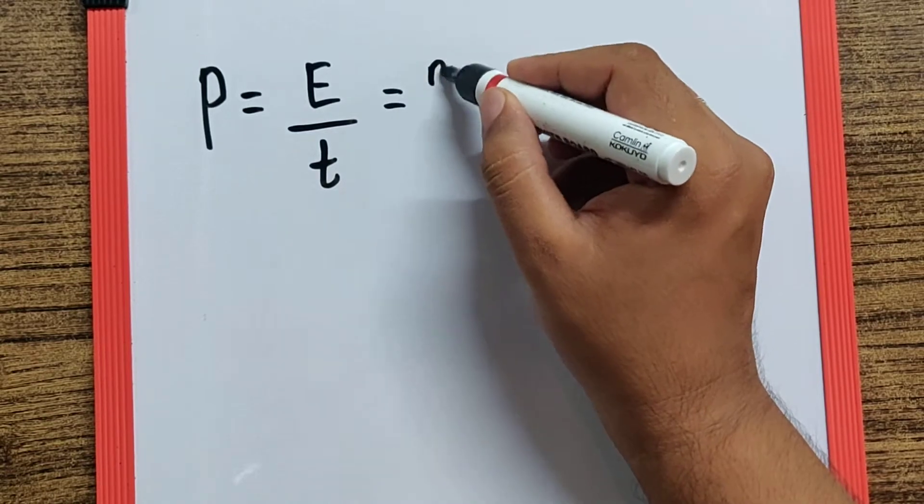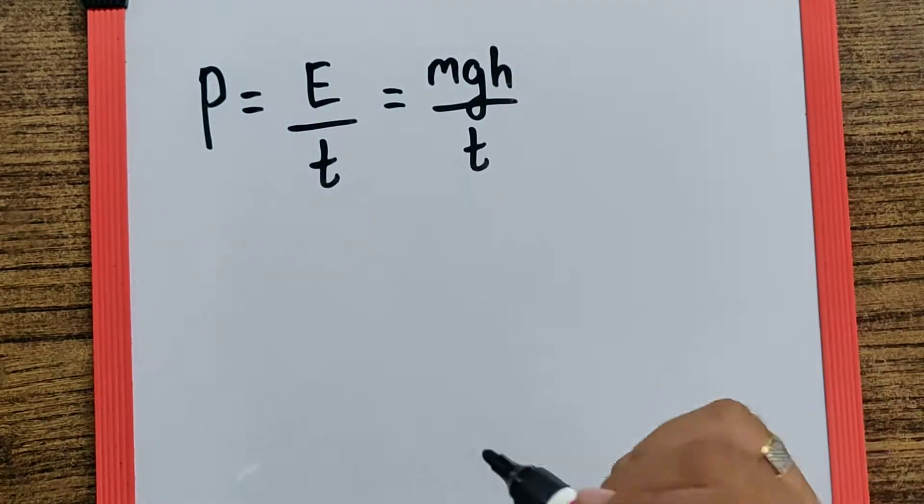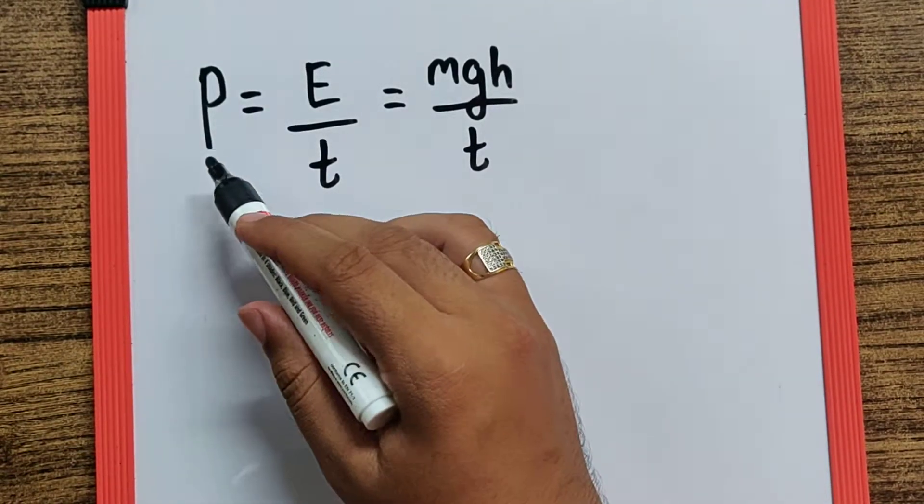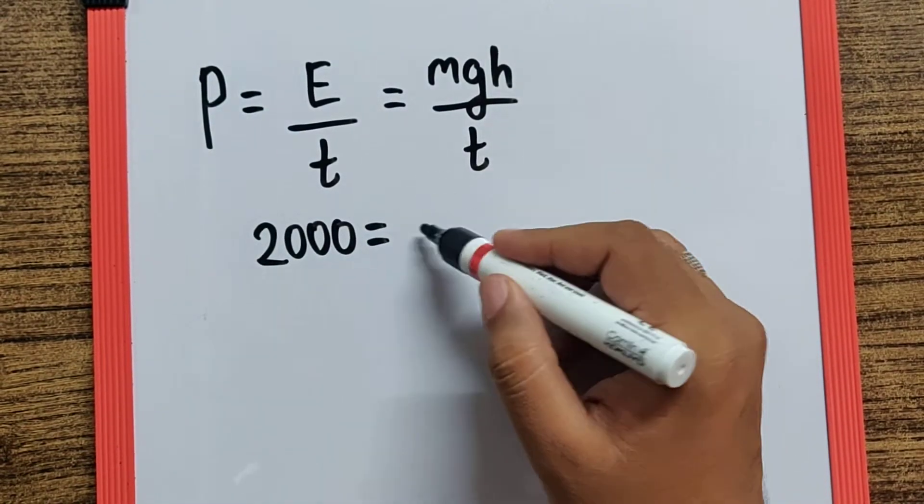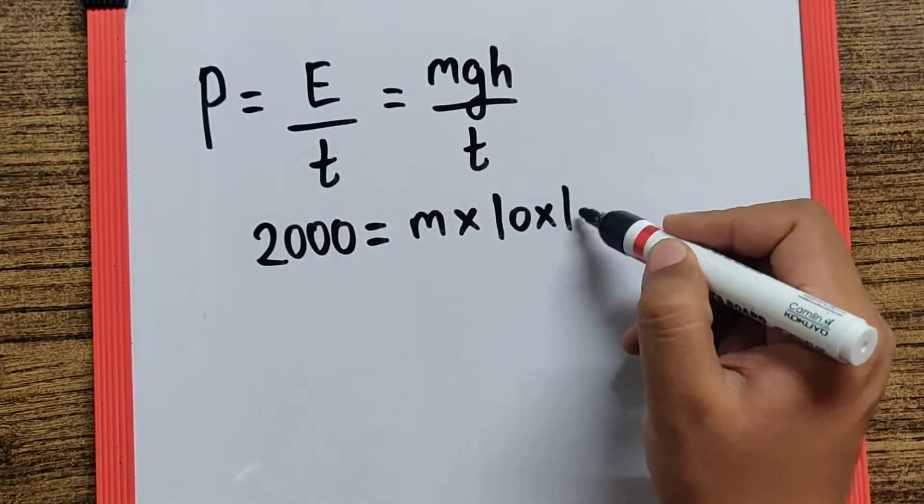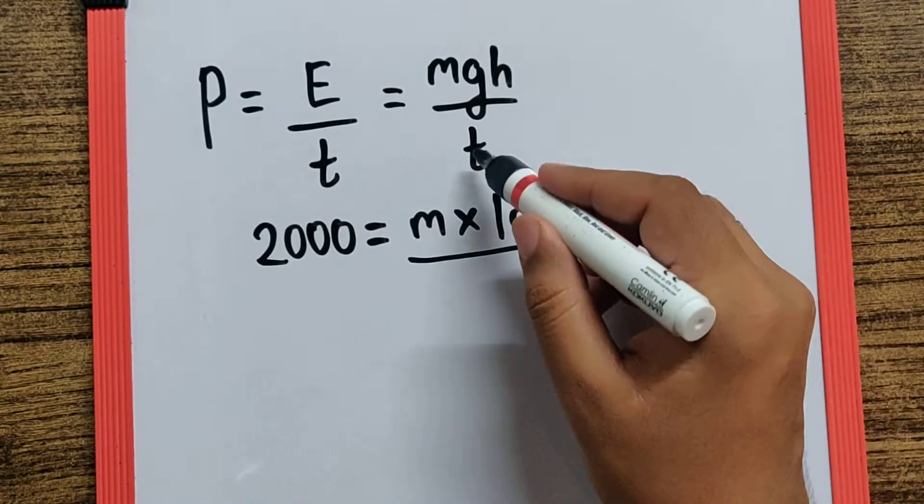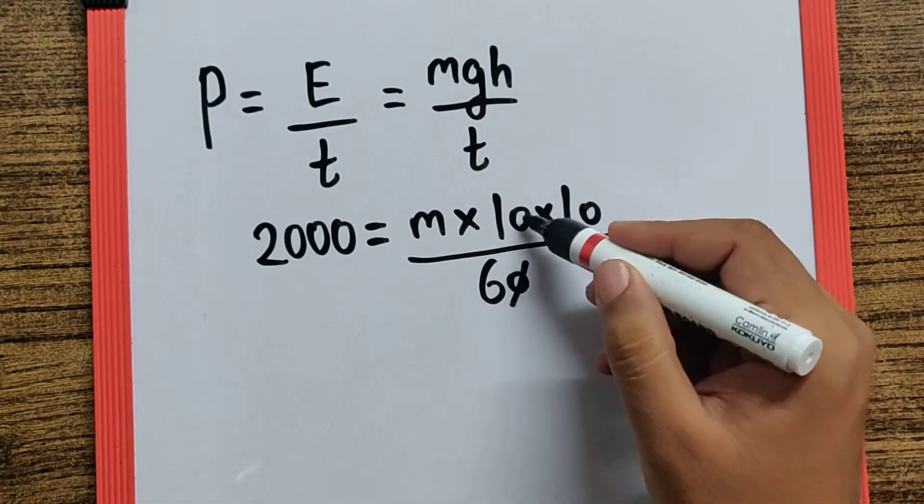And the energy we are talking about is raising a body, therefore potential energy. So here the power is given as 2 kilowatts which is 2000 watts. Mass we are supposed to find. G we can take it as 10, H is given as 10, and time is 1 minute which is 60 seconds. So if you cancel the zeros here and here...